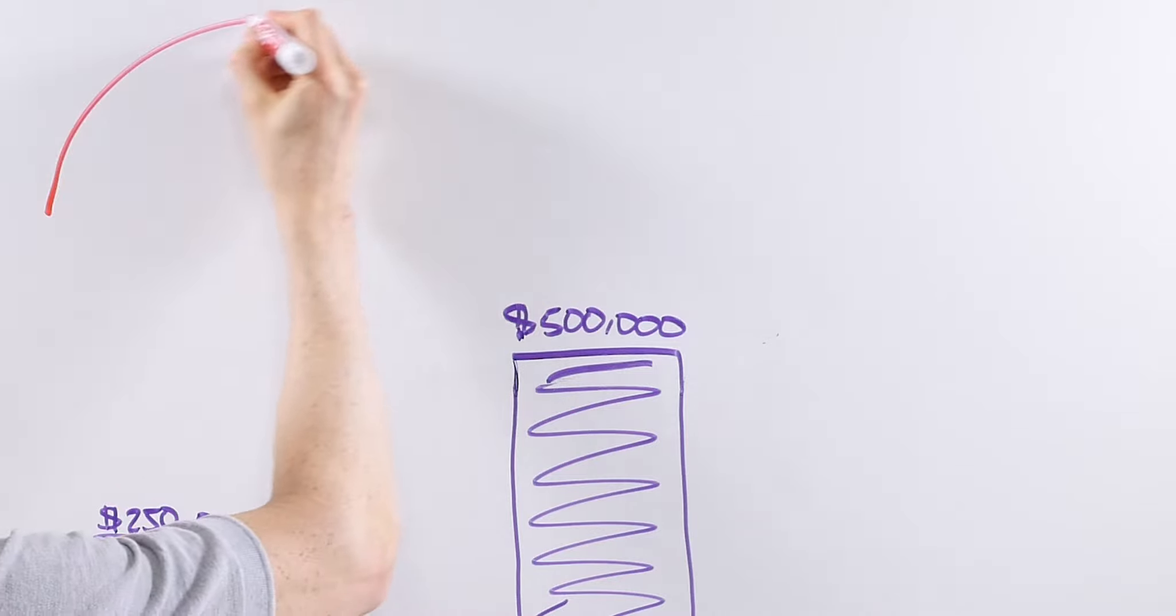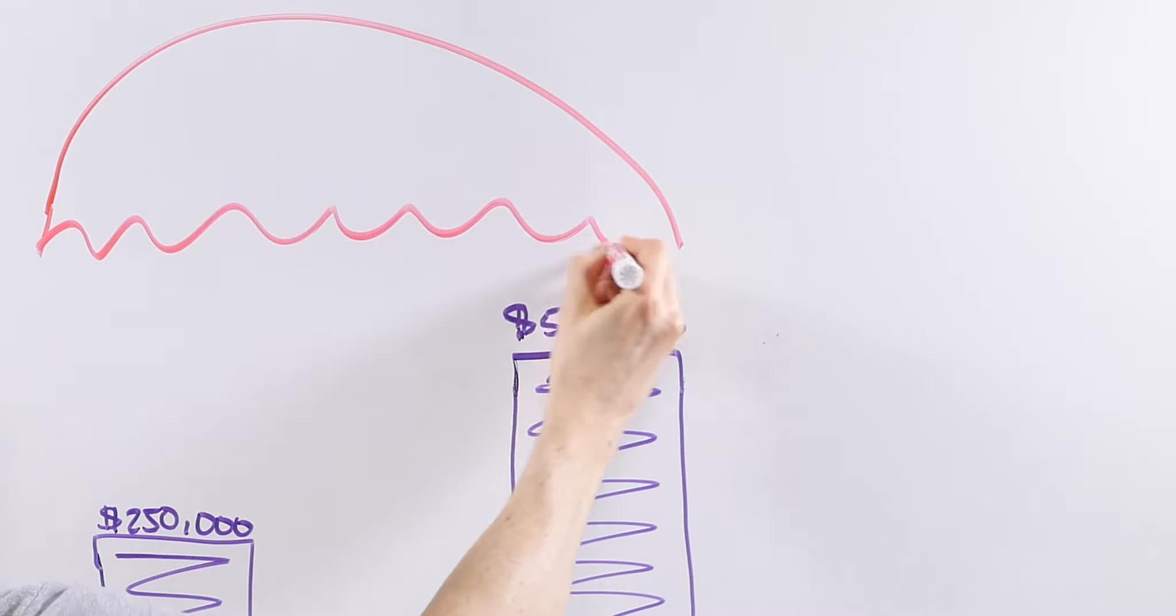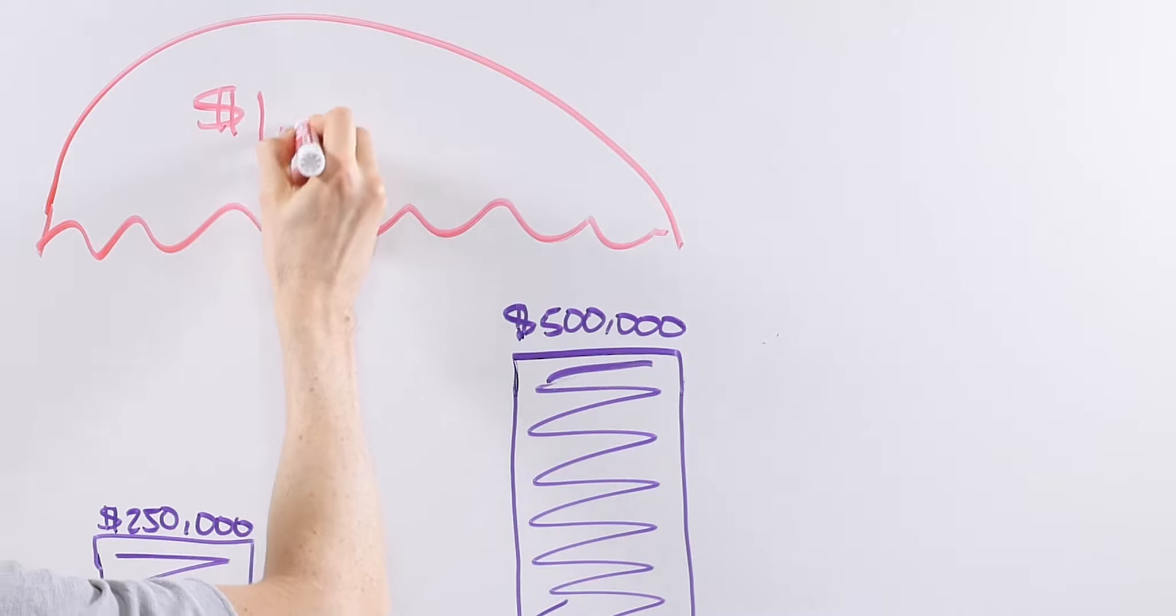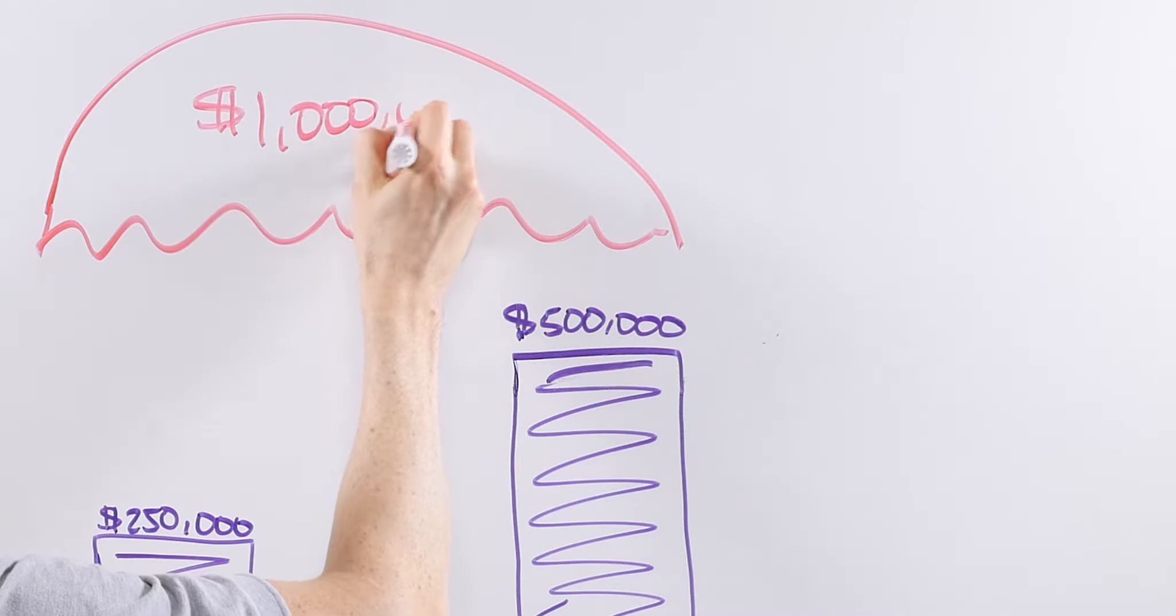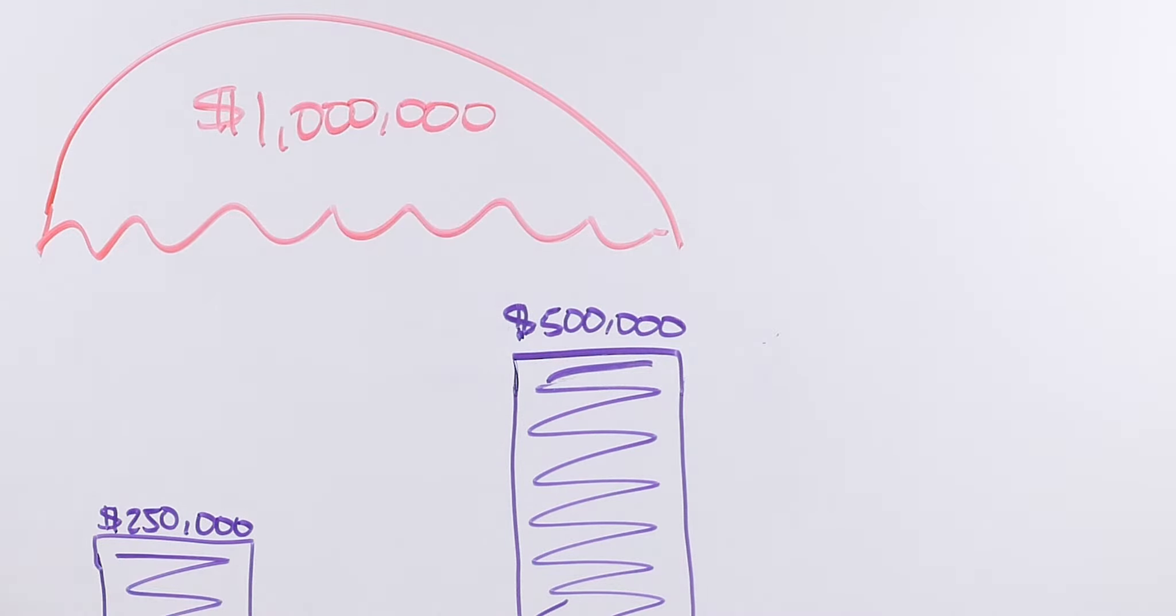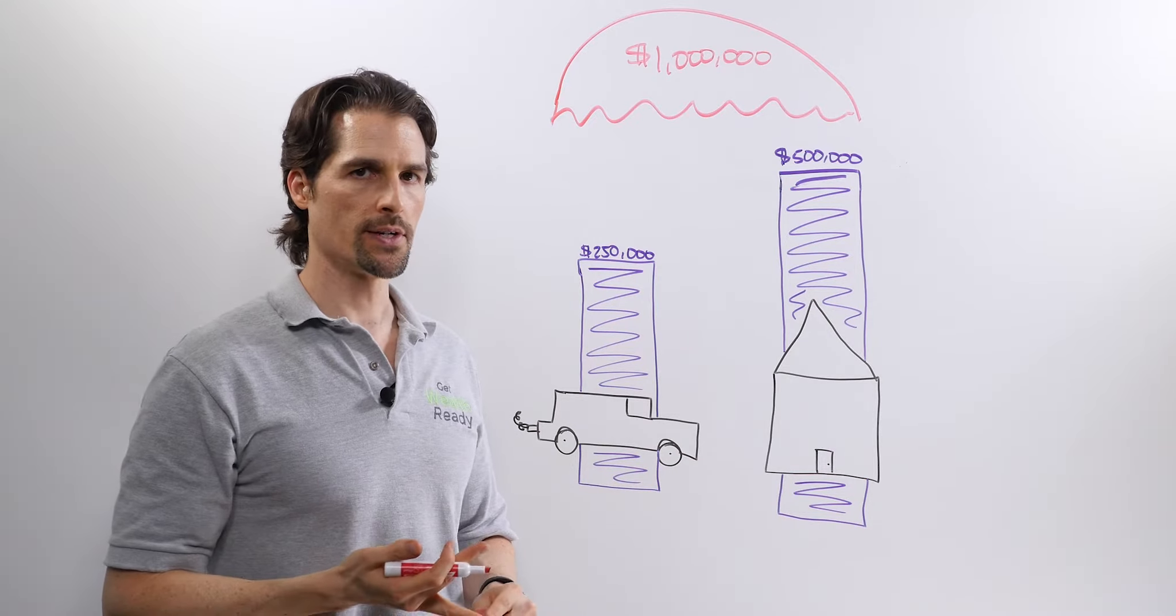So how can we protect ourselves? Well, the answer is umbrella liability insurance. And this is what it looks like. It sits over and above your auto policy and your homeowner's policy.